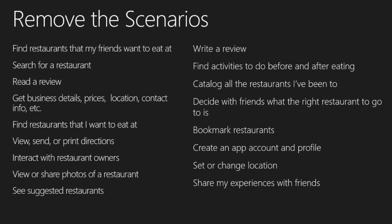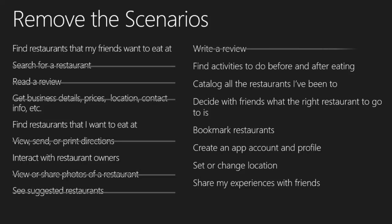So let's begin by removing some of these scenarios. Remove the items that are not goals, but are scenarios that help a user reach a goal. For example, a good one to remove is search for a restaurant — it's not really a scenario, it's more of an action that's going to be performed. The same with reading a review — this is more like content interfacing. Business details, prices, locations — same premise. View, send, or print directions — again, these are actions. View or share, anything with sharing and viewing, seeing suggested restaurants, writing anything, bookmarking — these are all actions that might instead be better added into the features section.